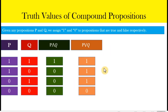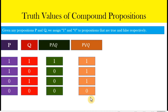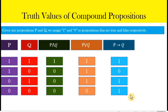For a disjunction, it is only false in the last row — that happens if both of the disjuncts are also false. For a disjunction, it is true if both of them or one of them is true. It is actually the reverse of the conjunction: a conjunction is true if both are true, but a disjunction is false only if both are false.